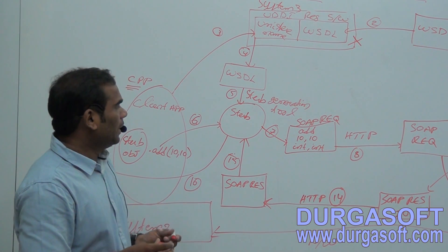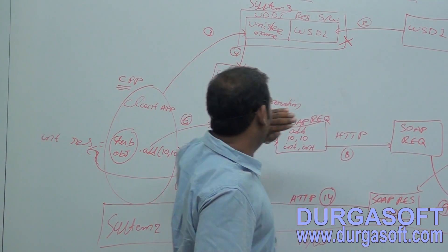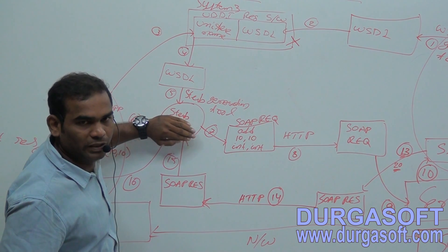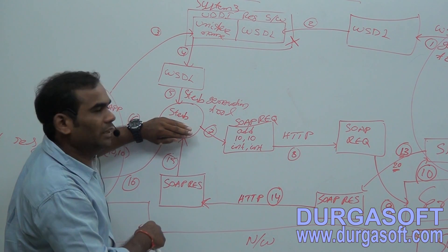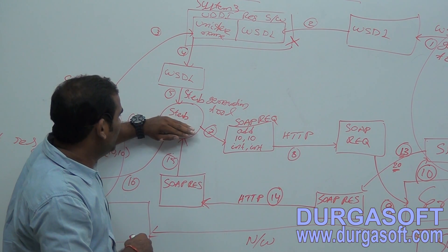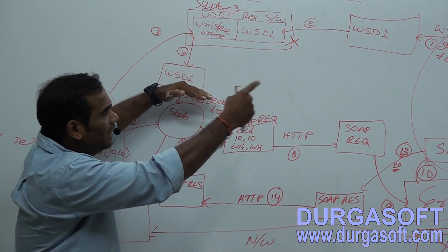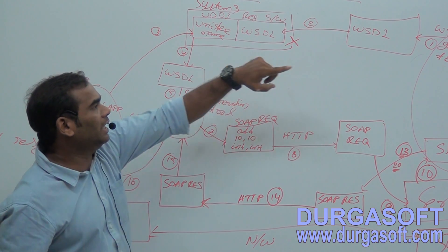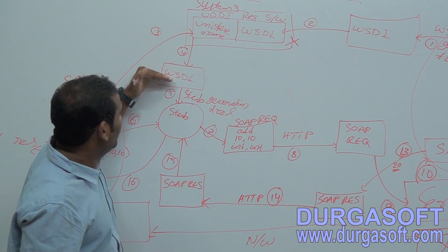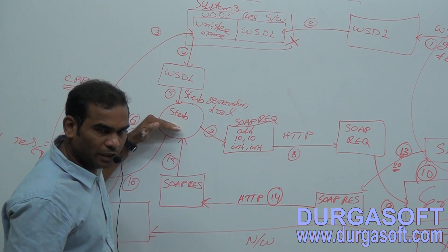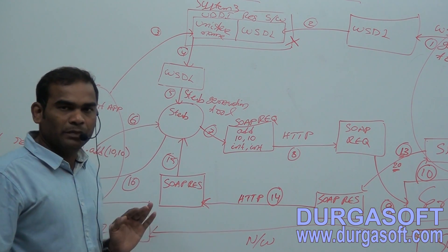The next property of the stub is that whatever methods we have in the service class, the same methods will be available in the stub. How does the stub generation tool know which methods are in calService? Because the class details are already available in the WSDL file. When the stub generation tool reads this WSDL file, whatever methods are described in the WSDL file, the same methods will be available in the stub.